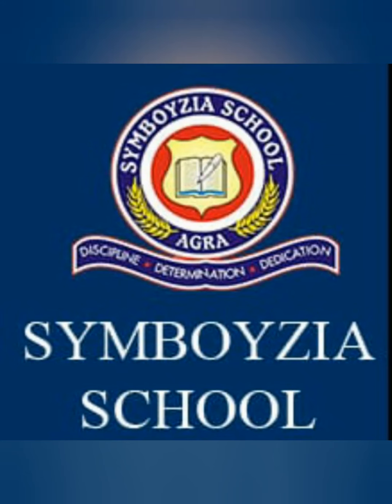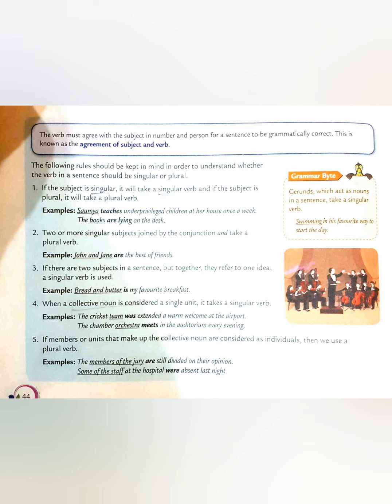Lesson Number 7: Agreement of Subject and Verb. Now, you have already learned about the sentence in the previous chapters. You know that in a sentence, we require a subject as well as a verb and an object to complete its sentence.